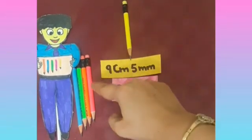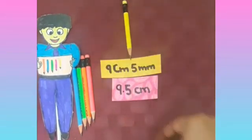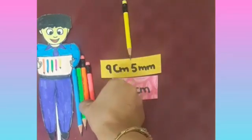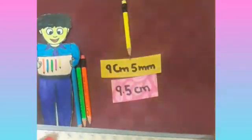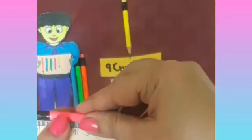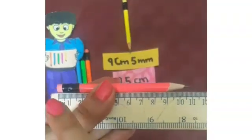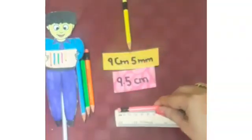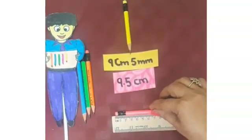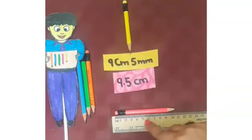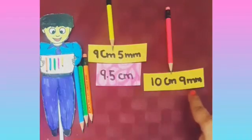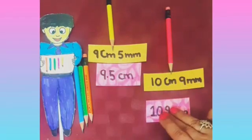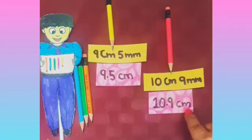Now we will measure the second pencil. Look at the scale very carefully. The length of the pencil is 10 cm and 9 mm. Now put down the pencil to measure its length. Yes, its length is 10 cm and 9 mm, which is 10.9 cm.